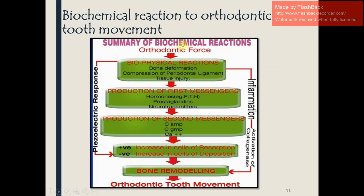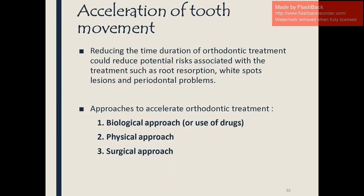Summary of biochemical reactions during orthodontic tooth movement: applying orthodontic force initiates biophysical reactions including bone deformation, compression of the periodontal ligament, and tissue injury. This leads to production of first messengers — extracellular signaling molecules such as parathormone, prostaglandins, or neurotransmitters — which in turn produce secondary messengers like cyclic AMP, cyclic GMP, and calcium. This cascade increases cells of resorption and deposition, resulting in bone remodeling and orthodontic tooth movement.